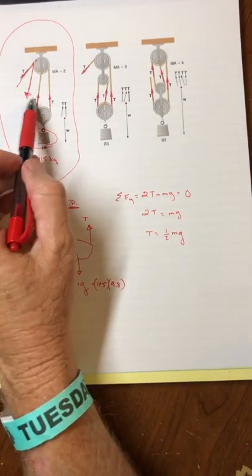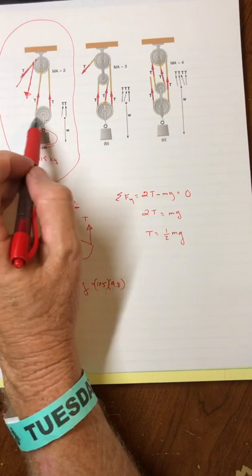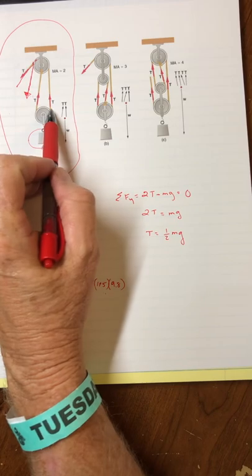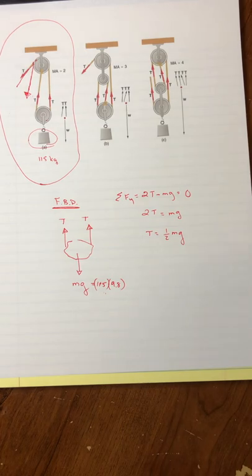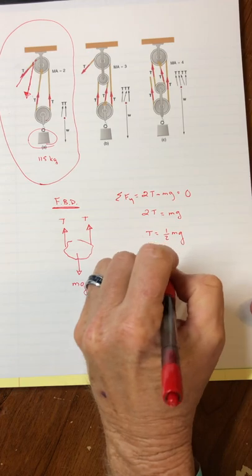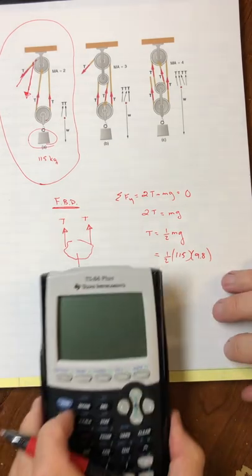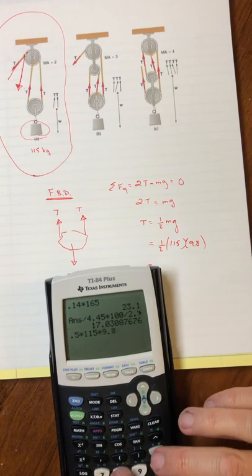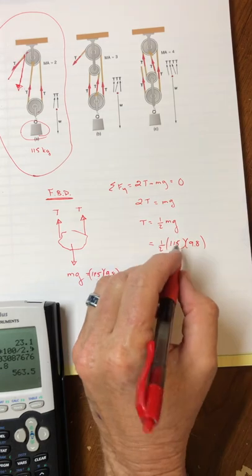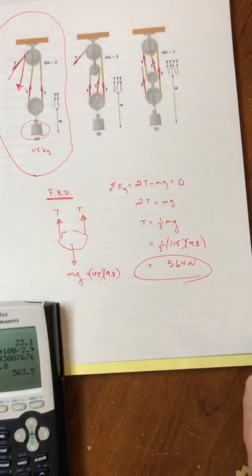And that's the advantage of this pulley system, is that I can then pull at half the weight because it wraps around twice. My pull is doubled, and I can actually then lift twice as much as I am pulling. And so in this case, we would have one half times 115 times 9.8. And so grabbing my calculator, one half times 115 times 9.8, and we would be pulling with 564 newtons.